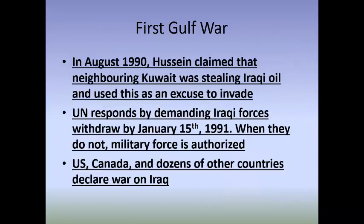In August of 1990, Hussein claimed that the neighboring country of Kuwait was stealing Iraqi oil and used this as an excuse to invade the country. Iraq had been in conflict with its larger neighbor Iran throughout the 1980s. The UN responded by demanding that Iraqi forces withdraw by January 15, 1991. When they did not do so, the UN authorized military force - and this is where Canada comes in.